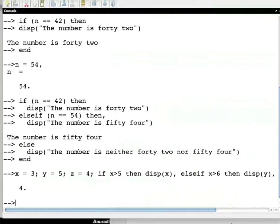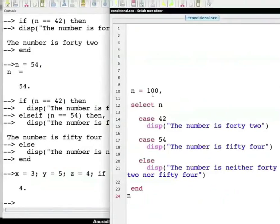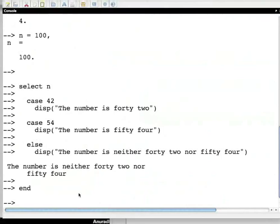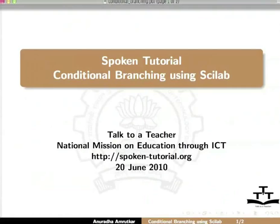We will assign 100 to variable n and check the cases 42, 54, and a default case represented by else. Cut, paste, hit enter. Here we see the output. This brings us to the end of this spoken tutorial on conditional branching using Scilab.